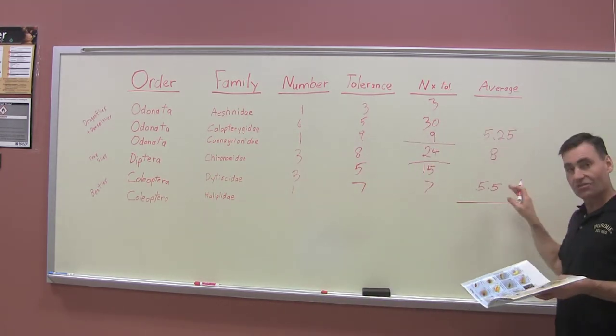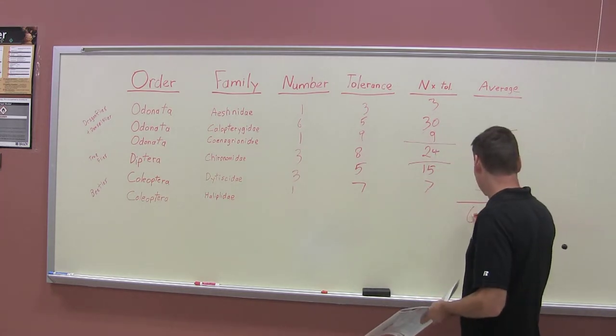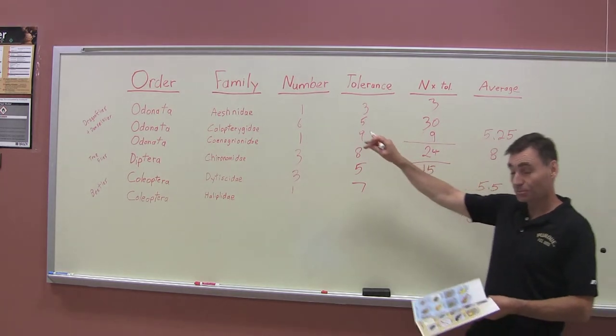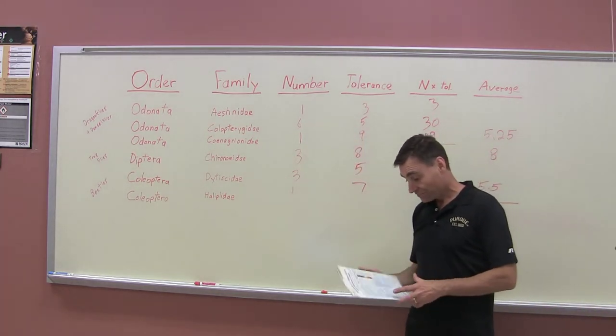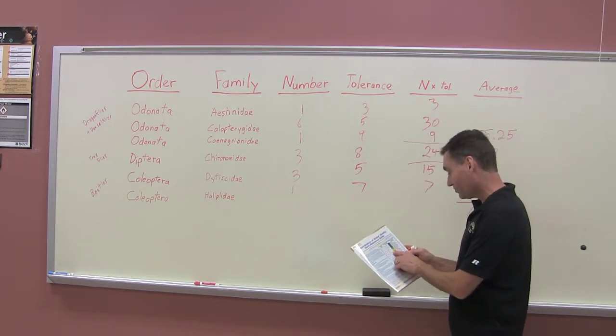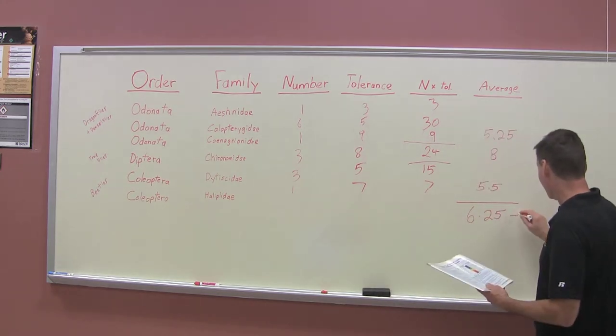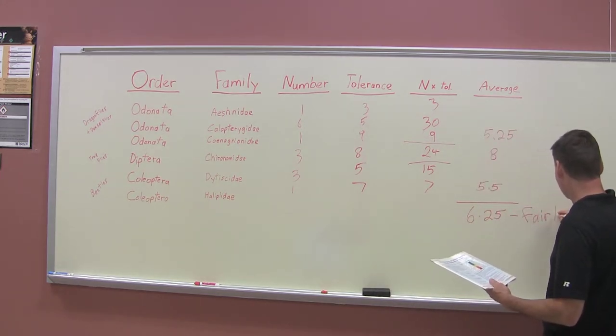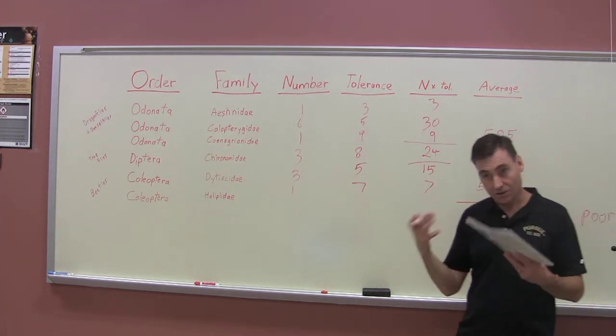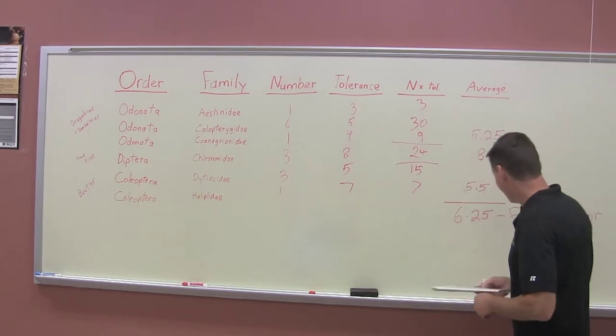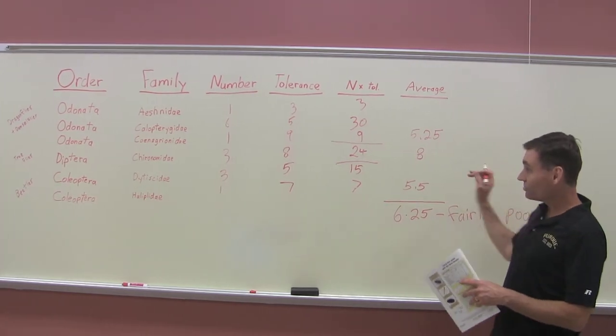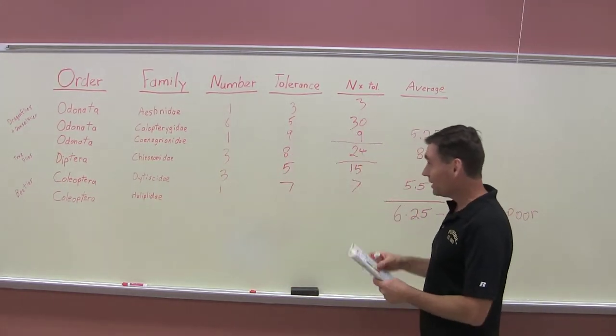We take an average of all these averages within orders: 6.25. So six and a quarter is our average tolerance to pollution of all the critters we found in that sample. You can look at the scale, which is right here, and 6.25 represents fairly poor. That water, according to the things we found, was fairly poor quality - fairly low oxygen, high organic pollutants, high siltation. You can do this using the insects you find if you can identify them to family and have a guide with tolerance values.